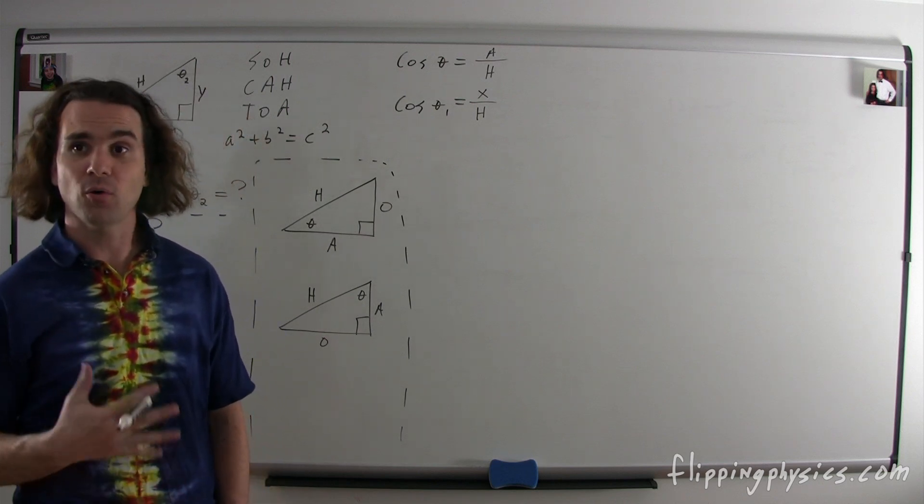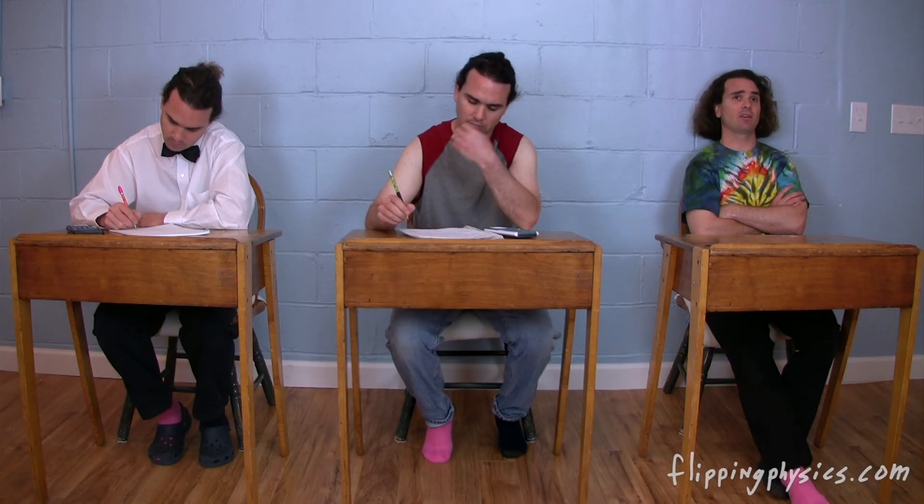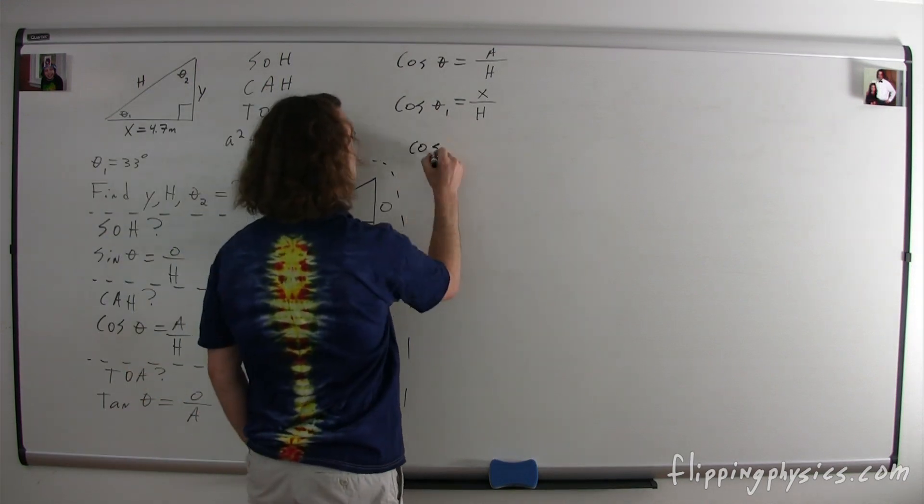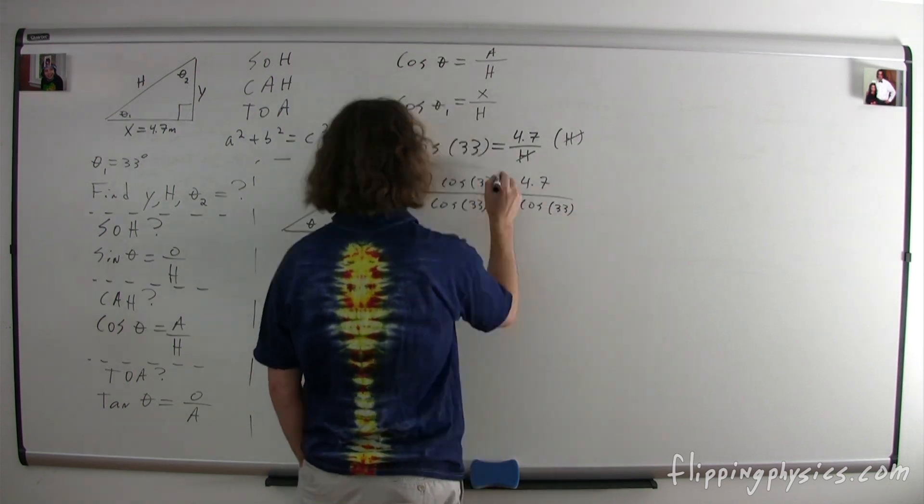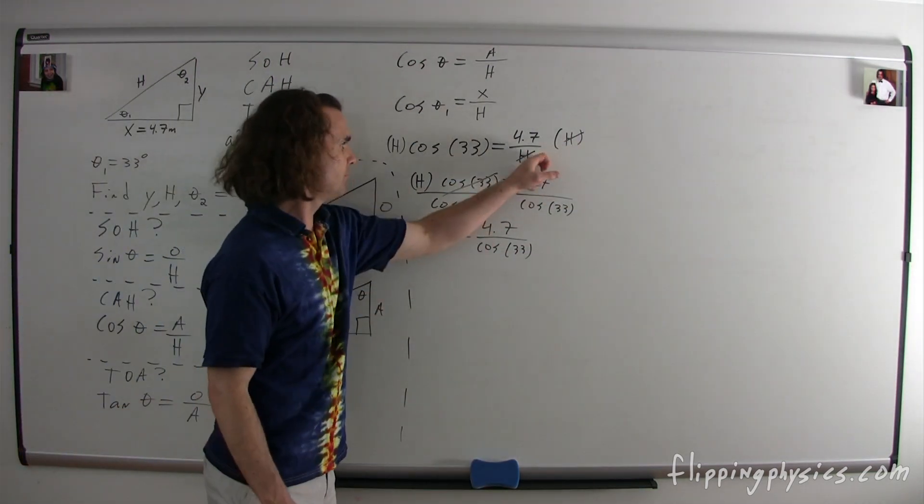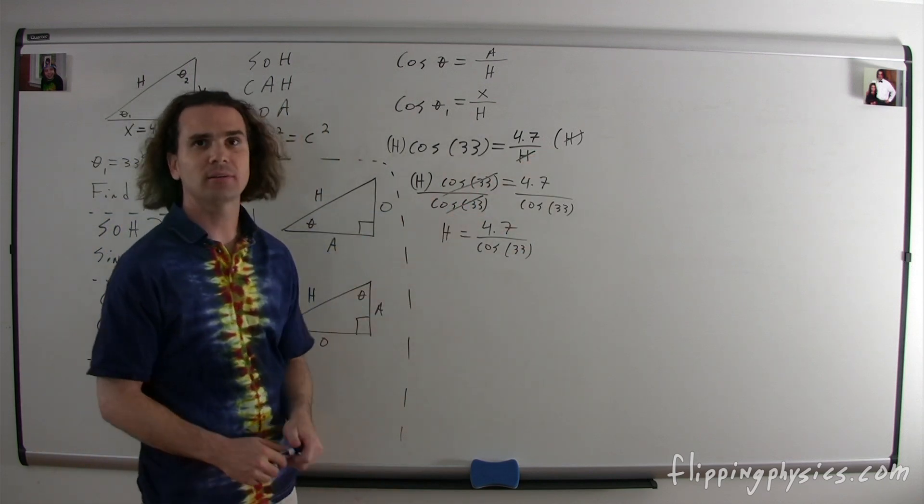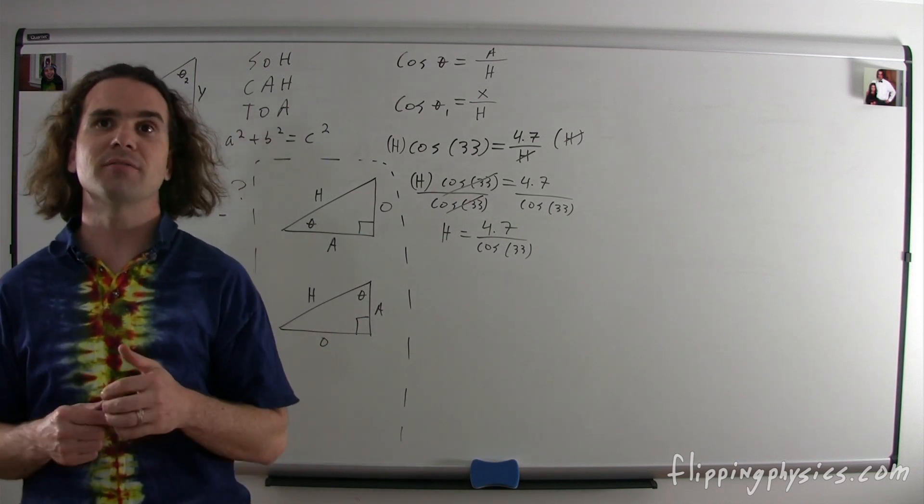Yes, now that we have written out the equation and substituted in our variables, we can substitute in our numbers. That means that cosine of 33 degrees equals 4.7 over the hypotenuse. Billy, how do we solve this equation for the hypotenuse? Multiply both sides by the hypotenuse and divide both sides by the cosine of 33 degrees. Absolutely. Notice how the hypotenuse cancels out and then cosine of 33 cancels out. And we end up with the hypotenuse equals 4.7 divided by the cosine of 33.